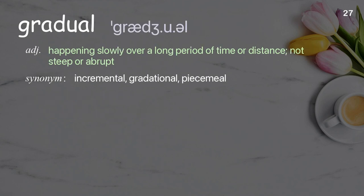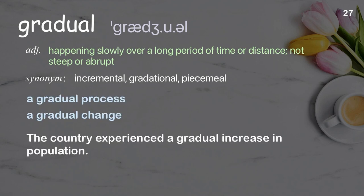Gradual: happening slowly over a long period of time or distance; not steep or abrupt. Examples: a gradual process, a gradual change. The country experienced a gradual increase in population.